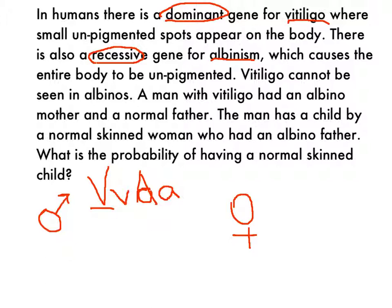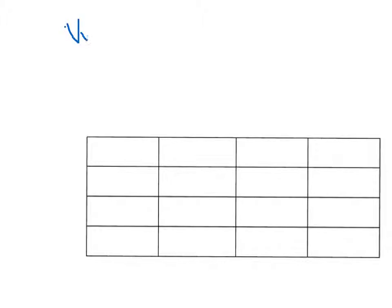The woman has an albino father but she's normal skinned, so she does not have vitiligo — she's got to be little v little v. She has an albino father but is normal skinned, so she has big A, and dad had to have given her a little a allele. So the father is big V little v, big A little a — he's double heterozygous for both traits. And mom is little v little v, big A little a.